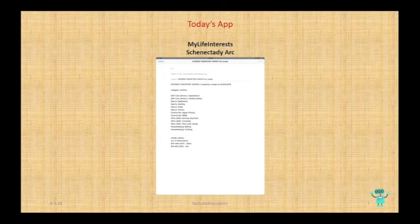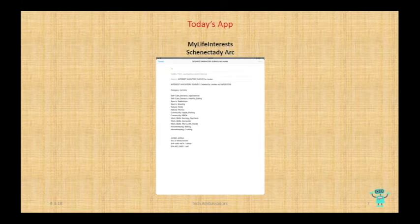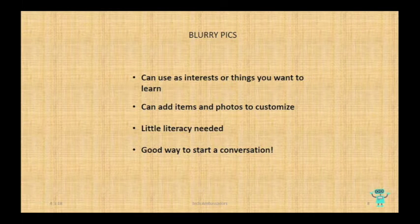At the end of the day, you can take all this information, and as an administrator you just put in 'admin' for the username and 'admin' for the password. You can go and see which interest inventories you've collected. Here's one that I did for myself. Then you can email it to whoever you want — somebody running the next ISP meeting, or to parents, to say 'hey, this is what your son or daughter wants to learn.' It's a really cool program.